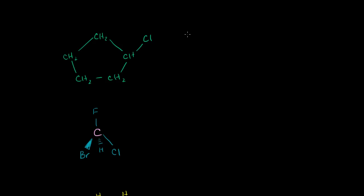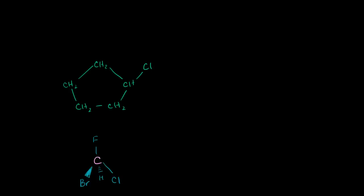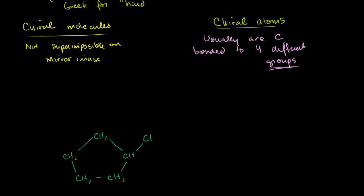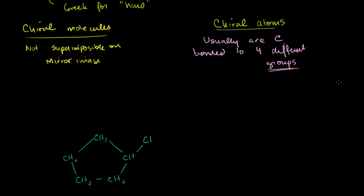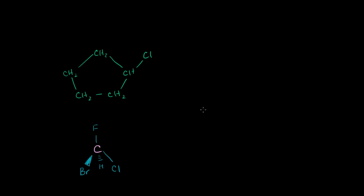So here I have chlorocyclopentane. The first question is: do we have any chiral atoms? When we look at our definition of chiral atoms, it all comes from this notion of handedness and not being able to be superimposable on your mirror image. We said that they're usually carbons bonded to four different groups.